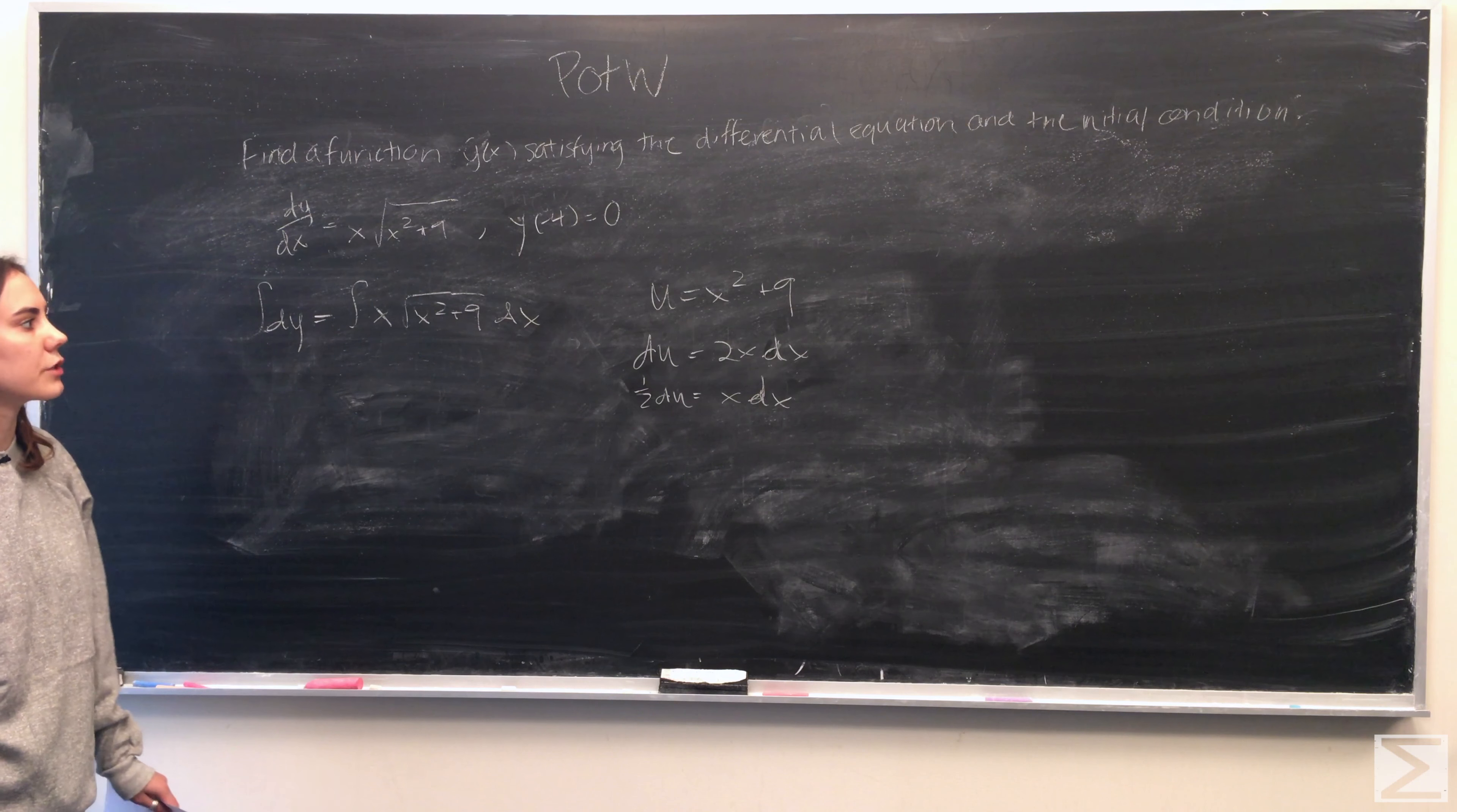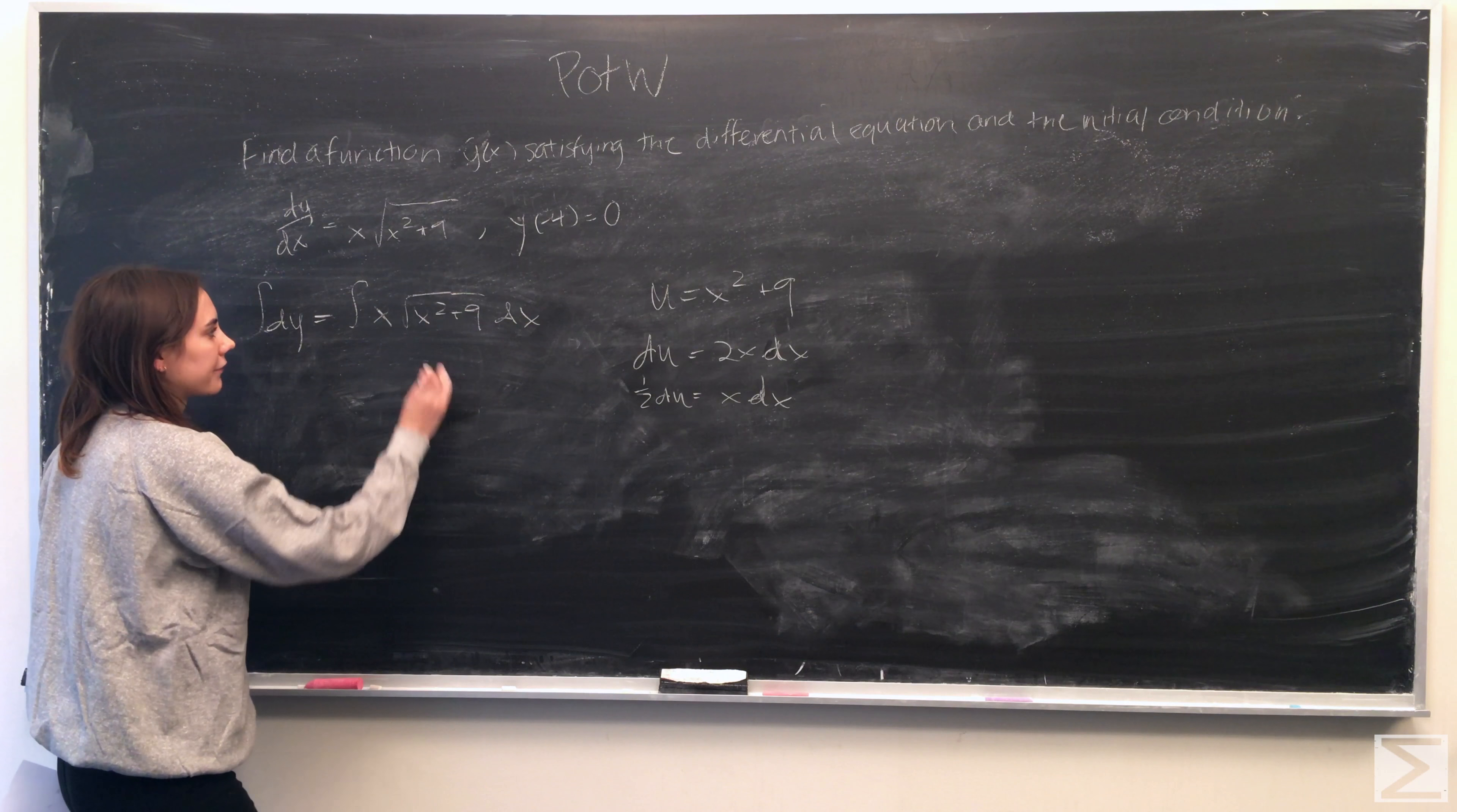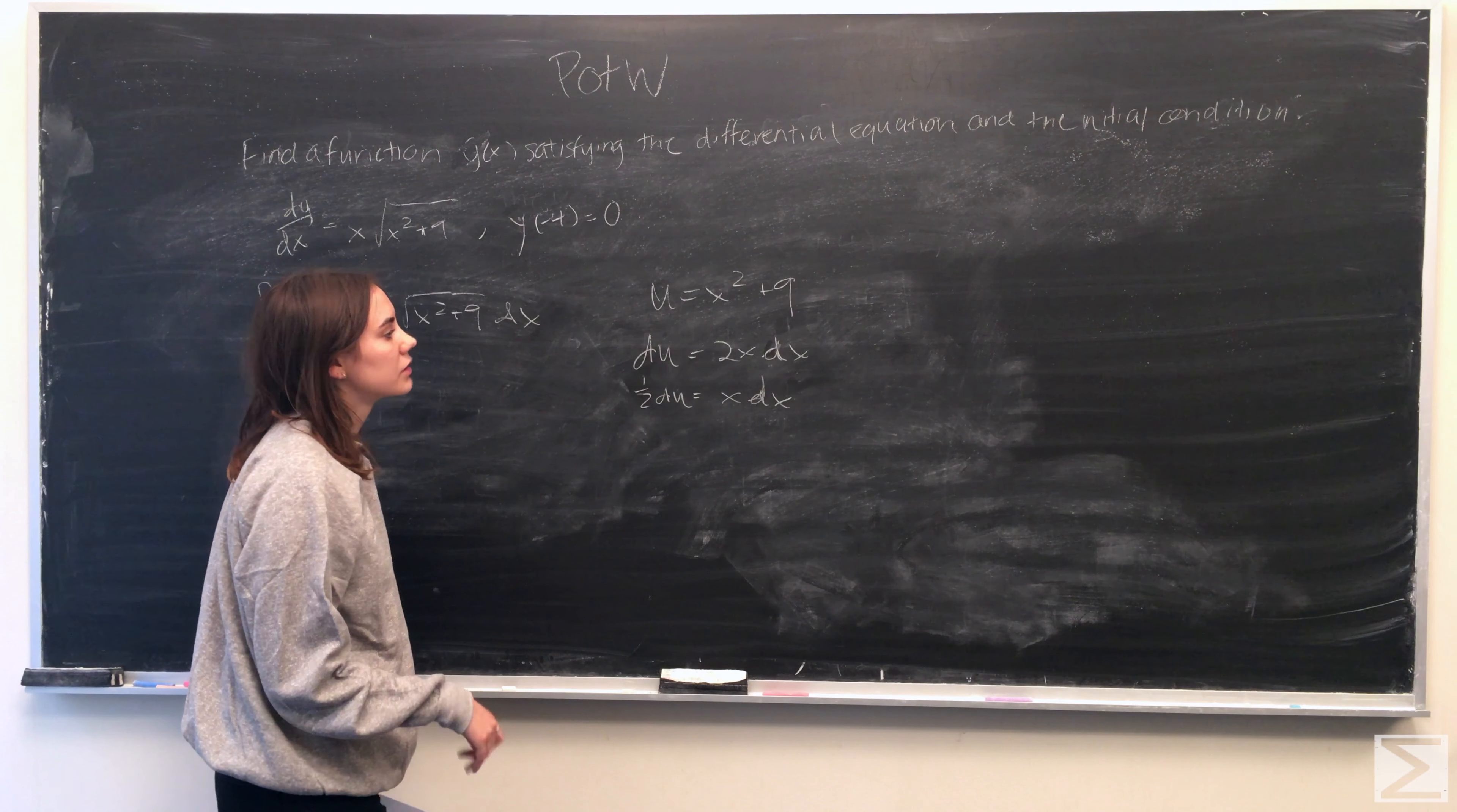So using u substitution, we can say that u is equal to x squared plus 9, this term within the square root. Therefore, du is equal to 2x dx.